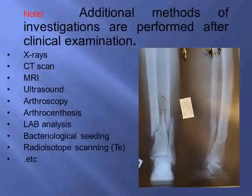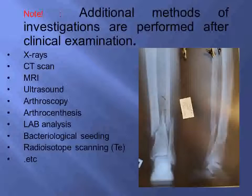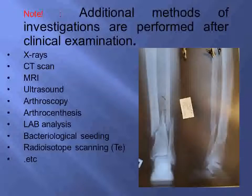Arthroscopy is an invasive method, but you can see with your own eye what is happening in the joint — whether the meniscus is torn, the state of the capsule, and you can perform joint debridement. You can combine diagnostics and treatment in one procedure. One procedure should have all necessary equipment to perform partial meniscectomy or ACL grafting, for example.